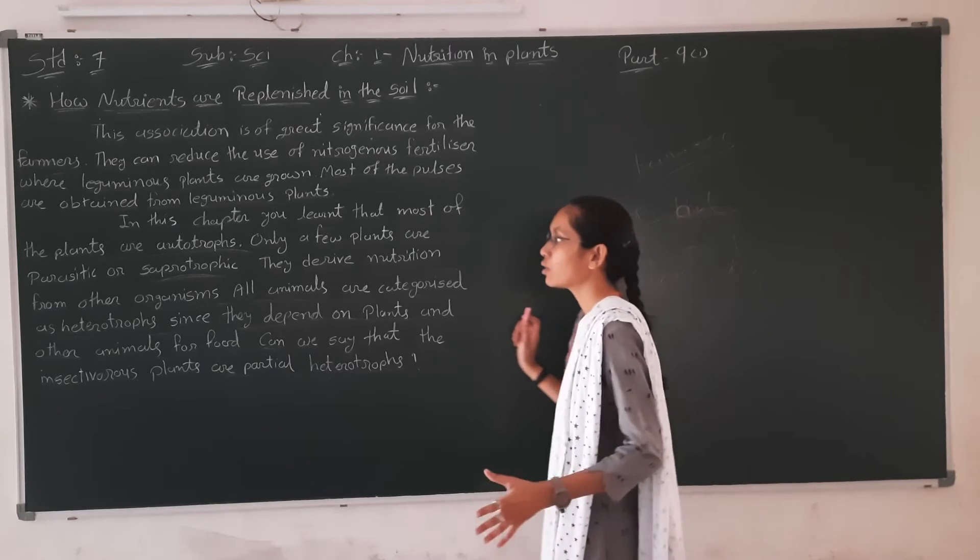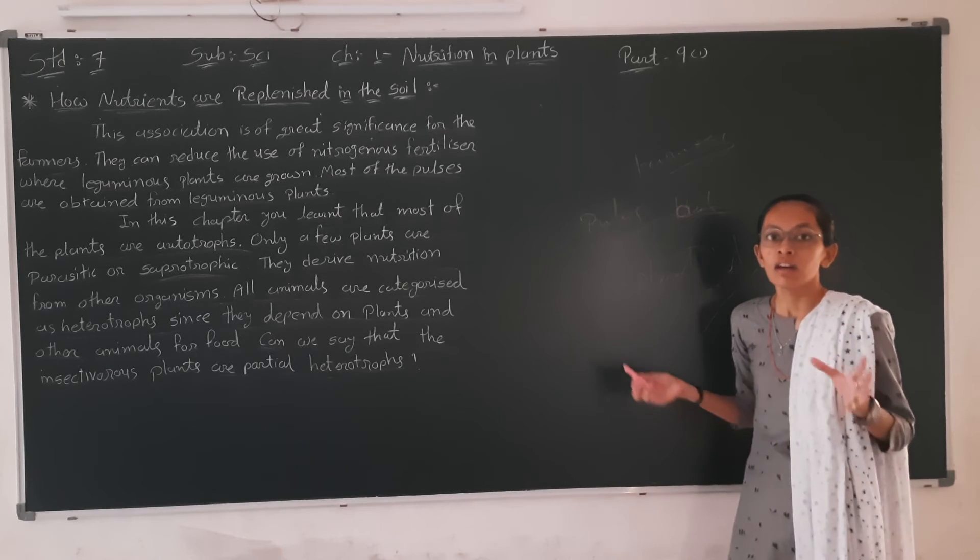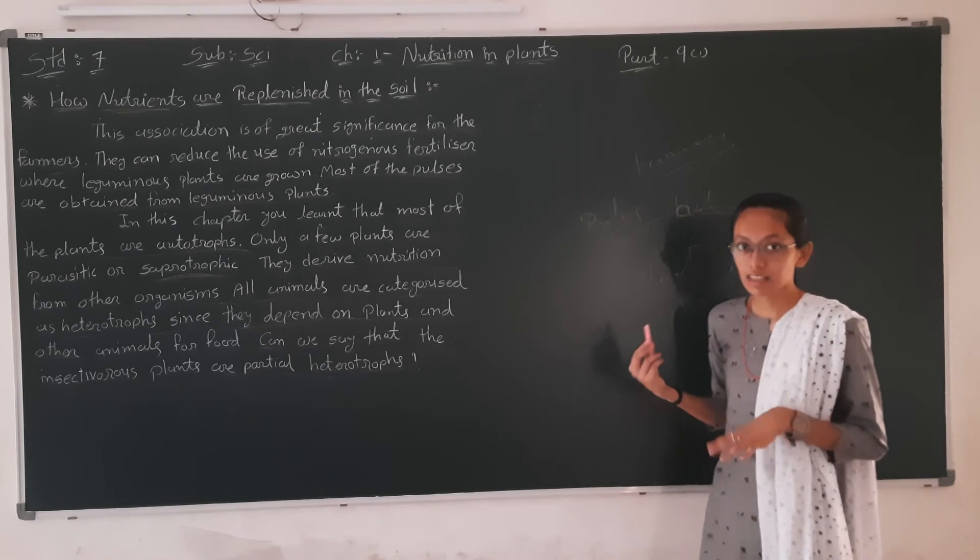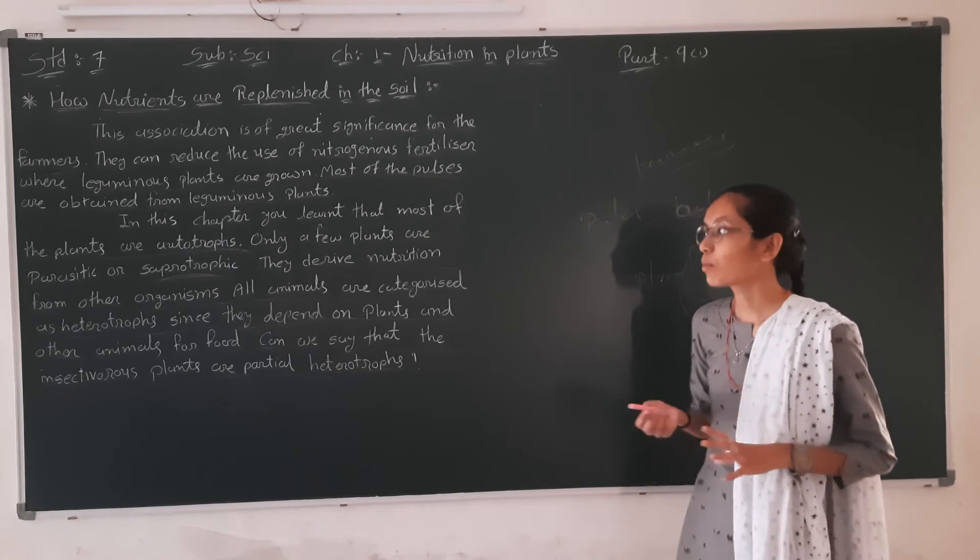Animals need different nutrients like hydrogen, oxygen, and minerals. These nutrients from plants are very important for growth.